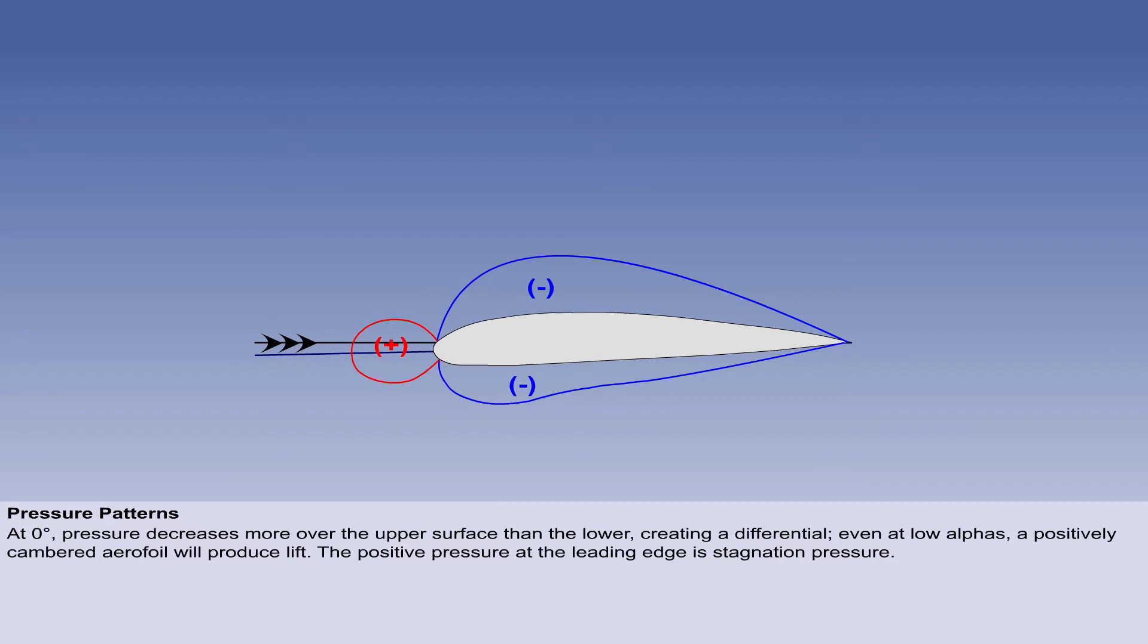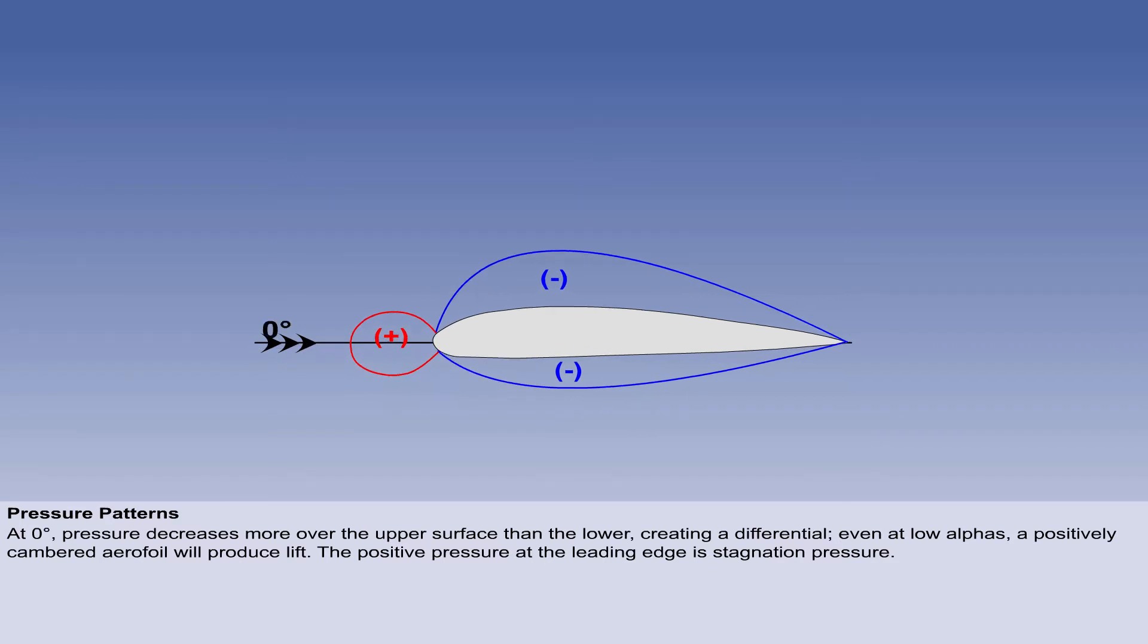At zero degrees alpha, there is a pressure decrease over the upper surface, compared with free stream flow, with a smaller decrease on the underside. Even at small angles of attack, between minus 4 and zero, a positively cambered section will produce lift. The positive pressure at the leading edge is dynamic, or, in this context, stagnation pressure.